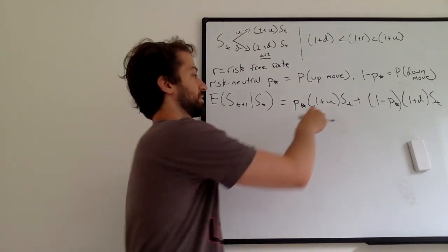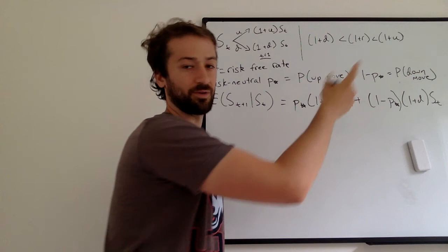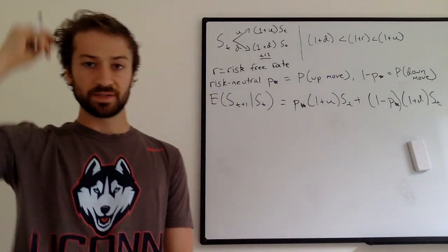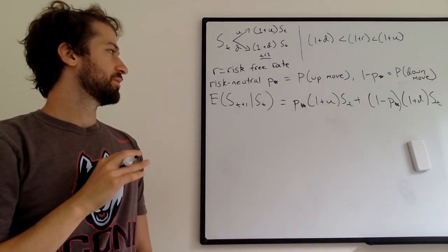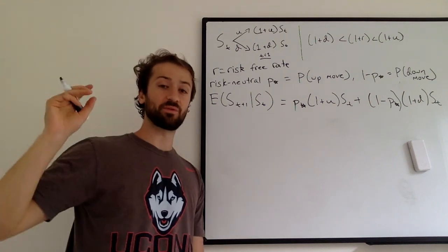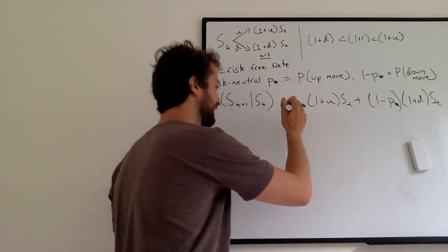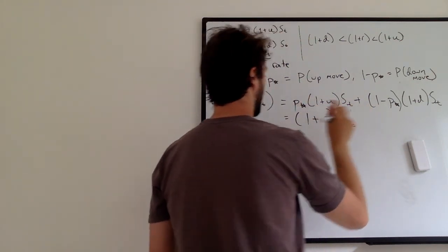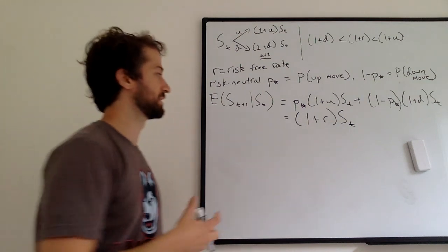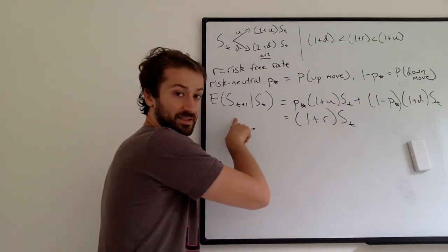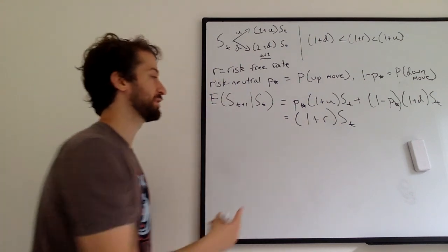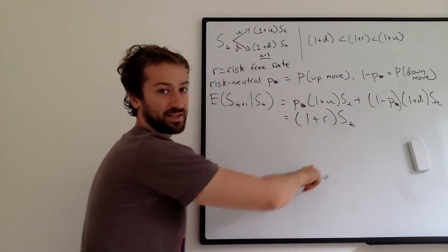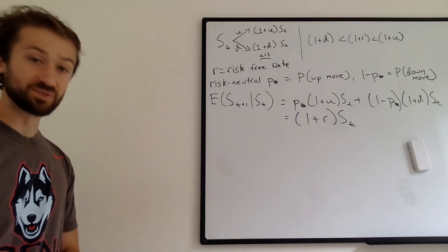So this is just a simple weighted average. Either it goes up and it's worth one plus U times S T times P star or it goes down. It's worth one plus D S sub T, times one minus P star. So that's just the expectation.